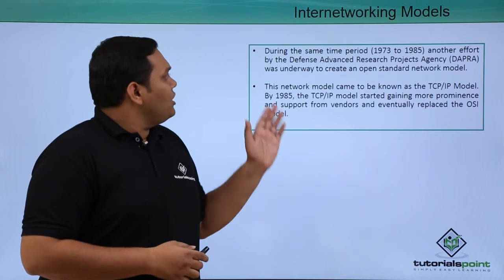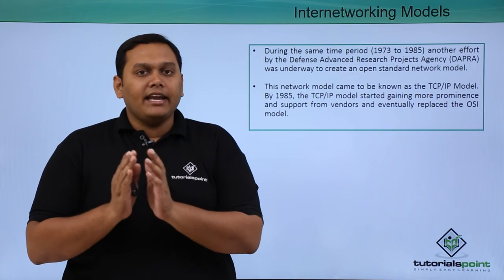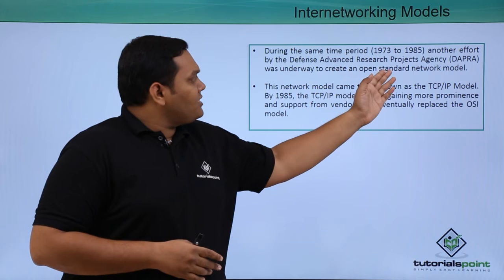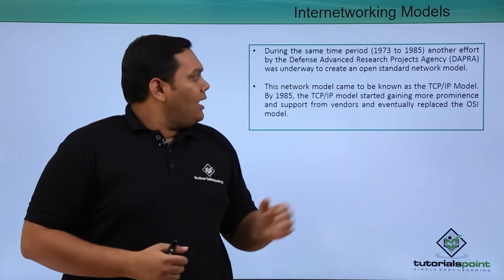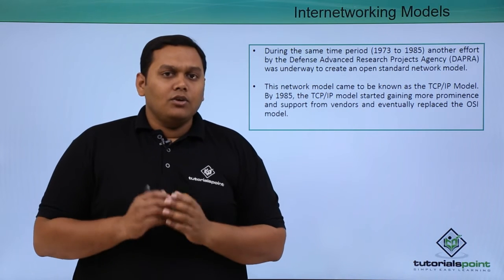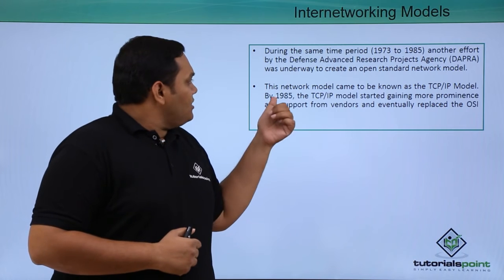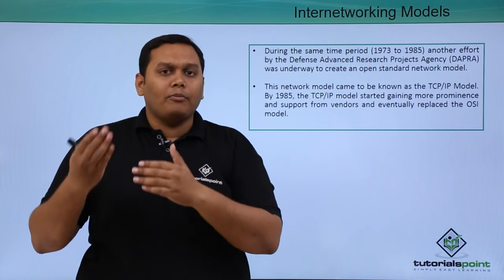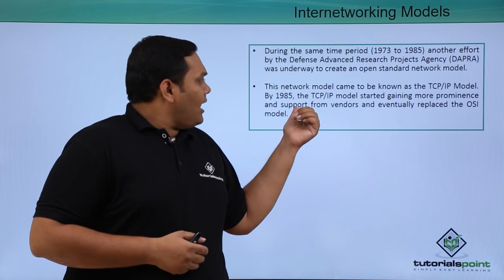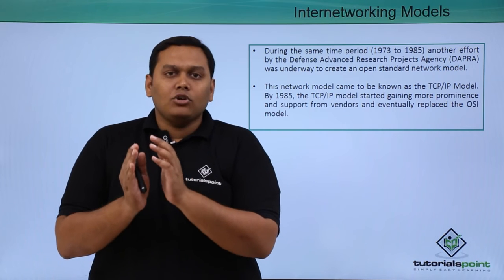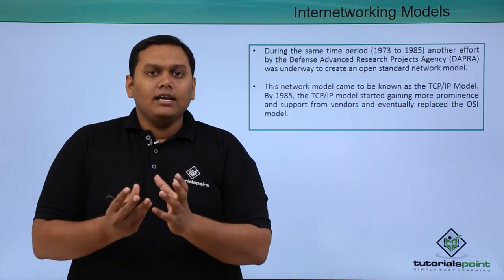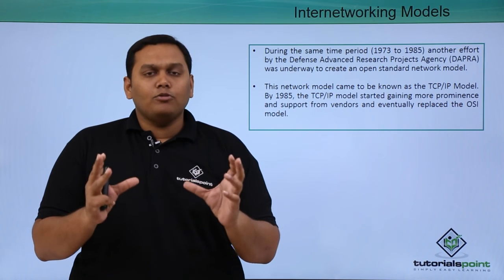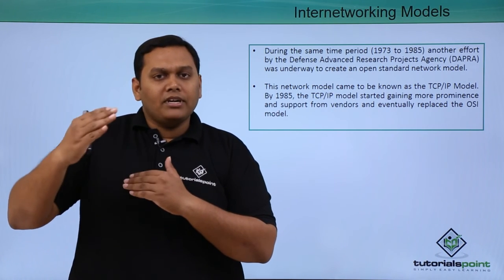Simultaneously, between 1973 and 1985, another effort was made by DARPA — the Defense Advanced Research Projects Agency — to create a new model similar to the open standard network model, which is called the TCP/IP model. By 1985, this model started gaining more prominence. It replaced the OSI model, gained more support from vendors, and eventually became the dominant standard adopted by all vendors.